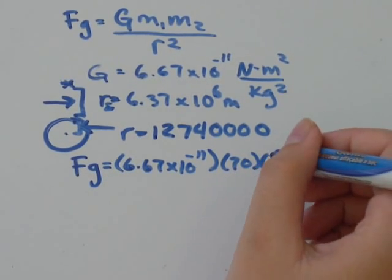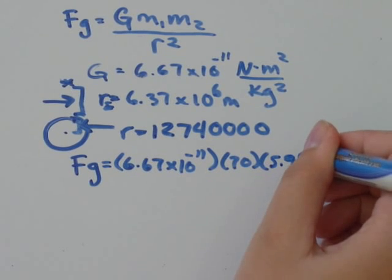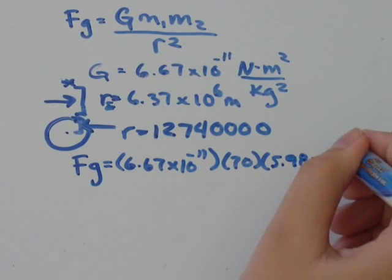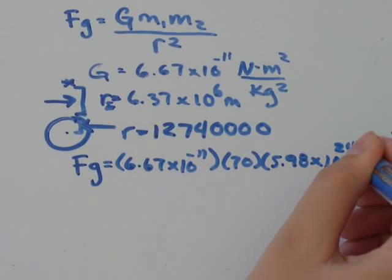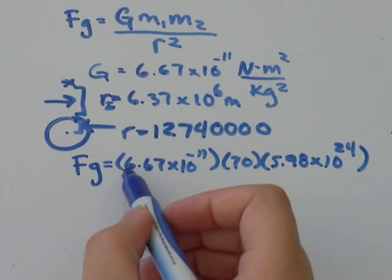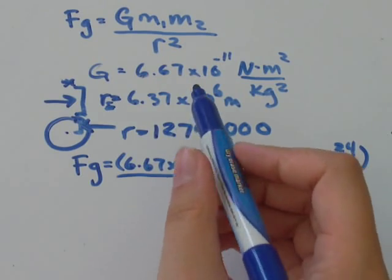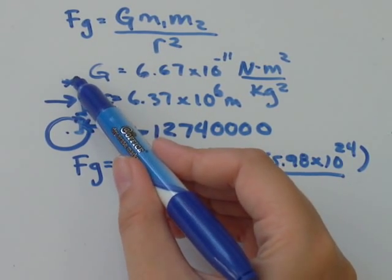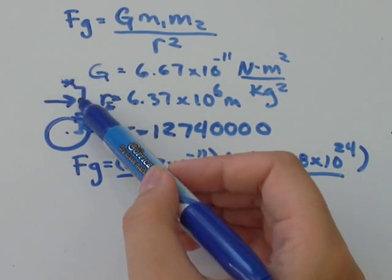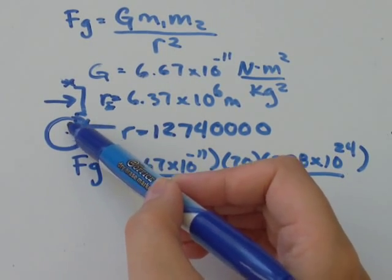All divided by the distance between them, which is the distance the asteroid is from the surface of the Earth, plus the radius of the Earth.